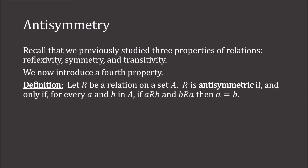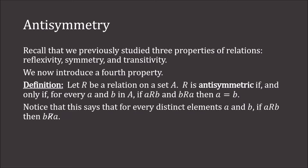Let R be a relation on set A. R is anti-symmetric if and only if for every A and B in A, if A is related to B and B is related to A, then A is equal to B. Notice that what this is saying is that for every distinct elements A and B, if A is related to B, then B cannot be related to A.